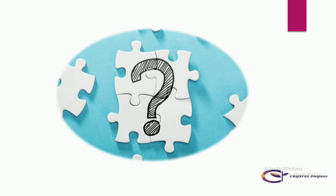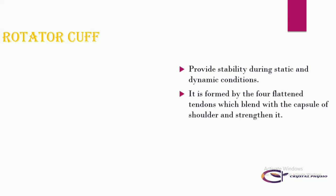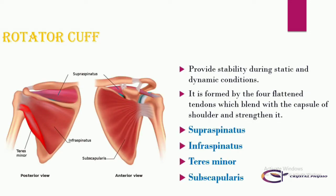But dislocation doesn't happen, so what can be the reason? To support the shoulder joint in its place, muscular and tendinous attachments provide stability during static and dynamic conditions. One important attachment is the rotator cuff muscles, formed by four flattened tendons which blend with the capsule of the shoulder and strengthen it. These four muscles are supraspinatus, infraspinatus, teres minor, and subscapularis.